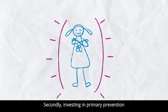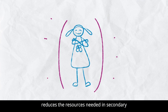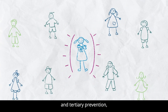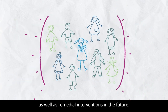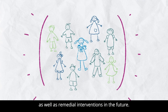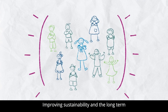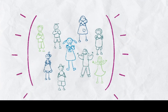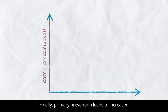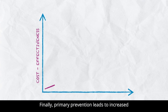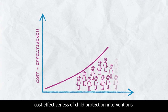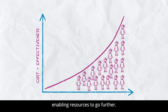Secondly, investing in primary prevention reduces the resources needed in secondary and tertiary prevention, as well as remedial interventions in the future, improving sustainability and the long-term impact of humanitarian responses. Finally, primary prevention leads to increased cost-effectiveness of child protection interventions, enabling resources to go further.